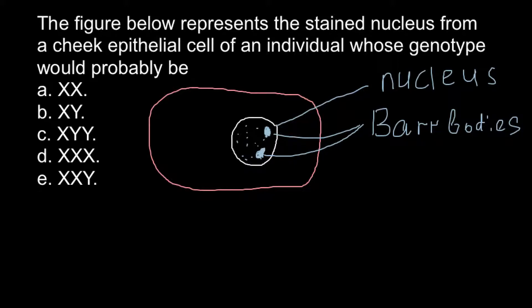Here is the epithelial cell and this is the nucleus. Here, these two dots are two bar bodies. Usually there is only one bar body that can be formed.